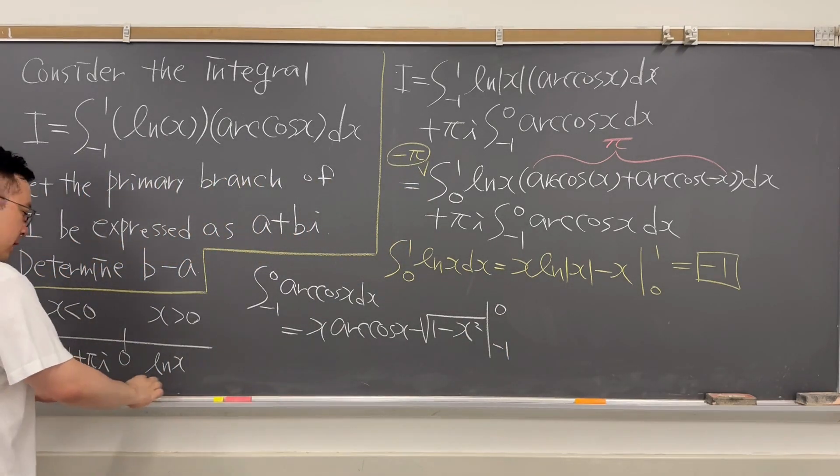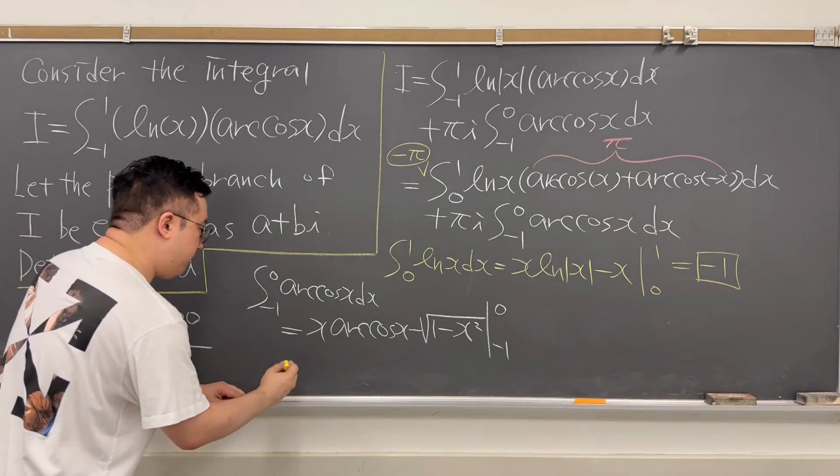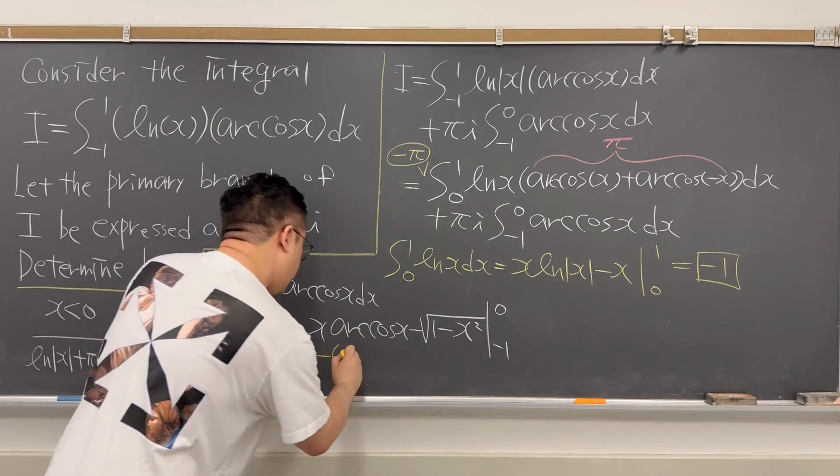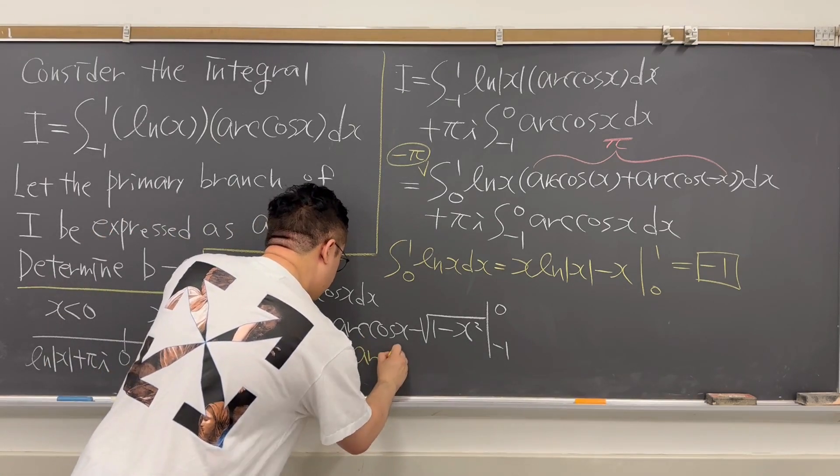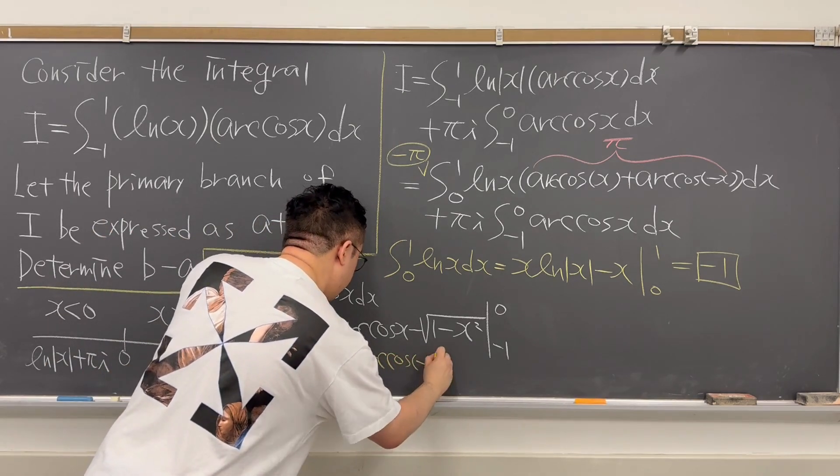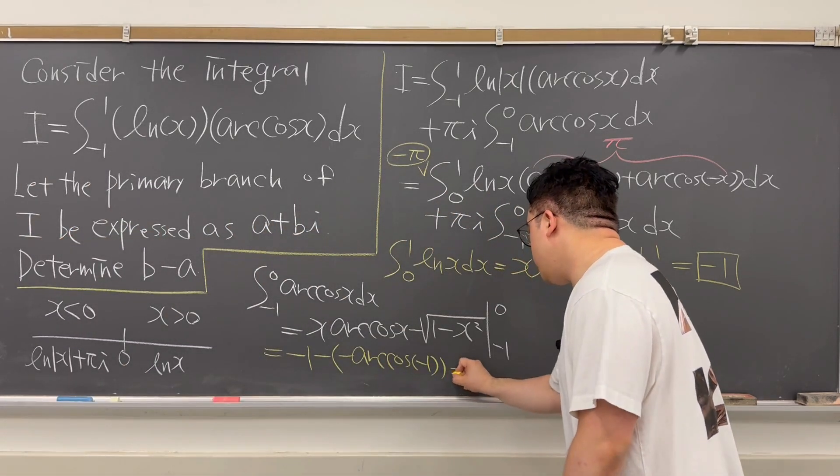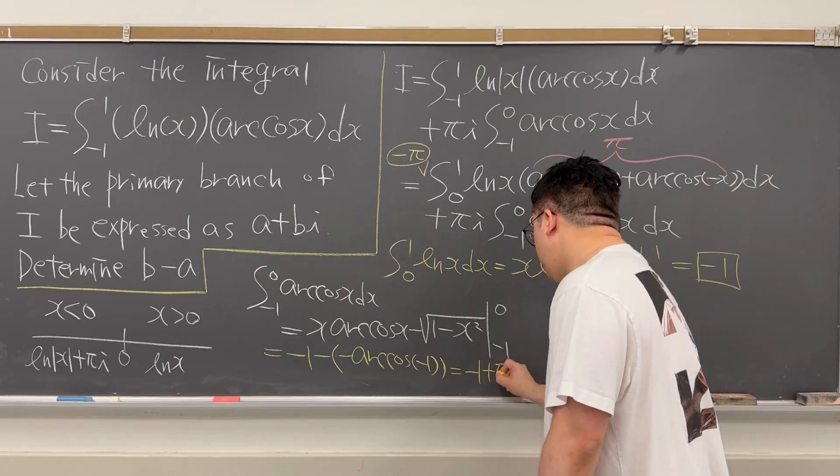Okay, so let's plug it in. So if you plug in the value, then we have negative 1 minus parenthesis, and then negative arccos of negative 1, and that's it, because your upper bound is equal to 0. So that's why this is just going to be equal to negative 1 plus π.